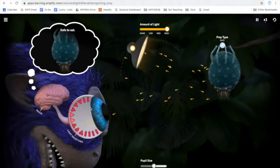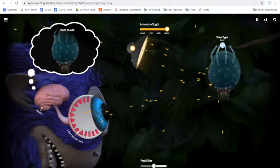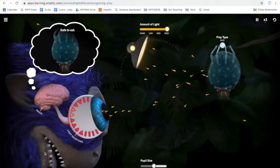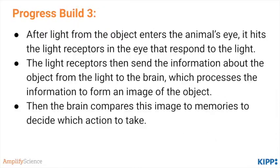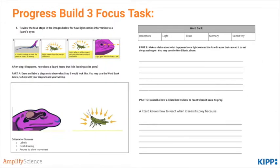The focus is on what's happening within the predator's eye and brain as it compares the object in front of it to memories of similar objects — a process called processing and recognizing. The predator then has a reaction based on whether the prey is safe to eat; if it is, it opens its mouth and gets ready to chow down. Students also do a series of card sorts to help them understand and remember the steps that take place within a predator's brain. Students should now understand Progress Build 3: after light from the object enters the animal's eye, it hits light receptors that respond to the light, which send information to the brain. The brain processes this to form an image, then compares it to memories to decide which action to take.